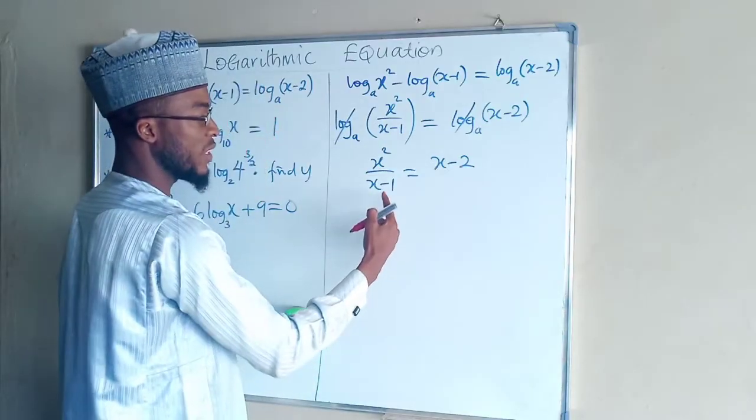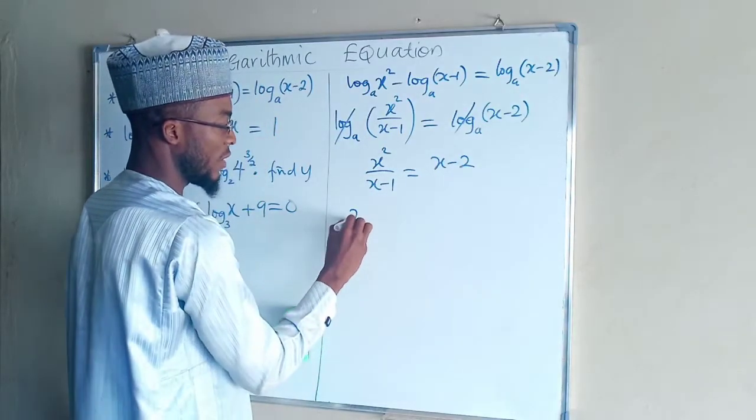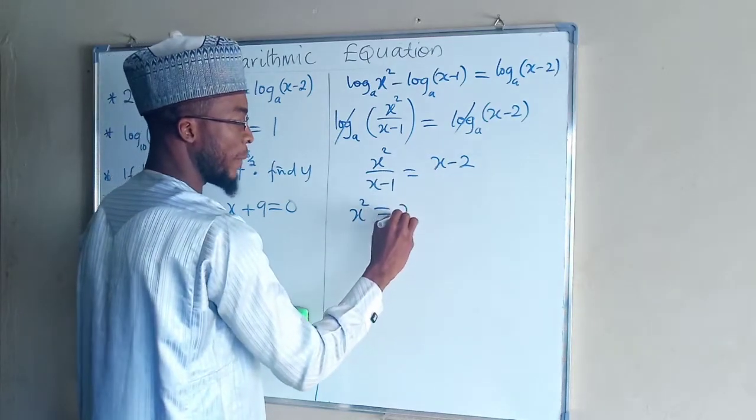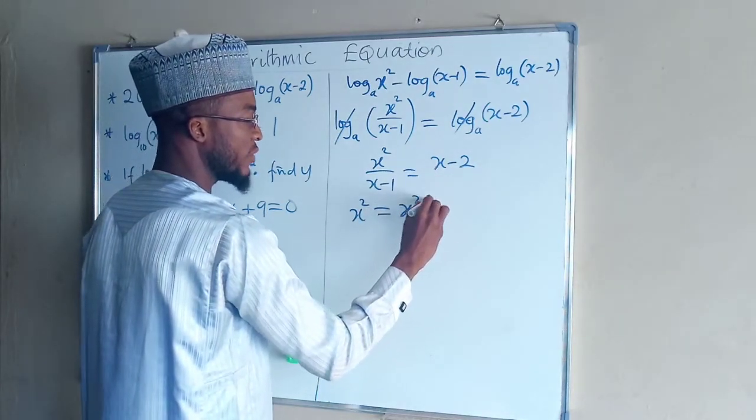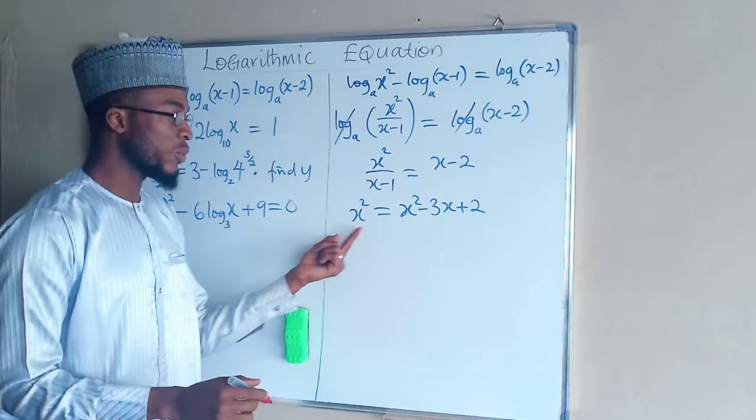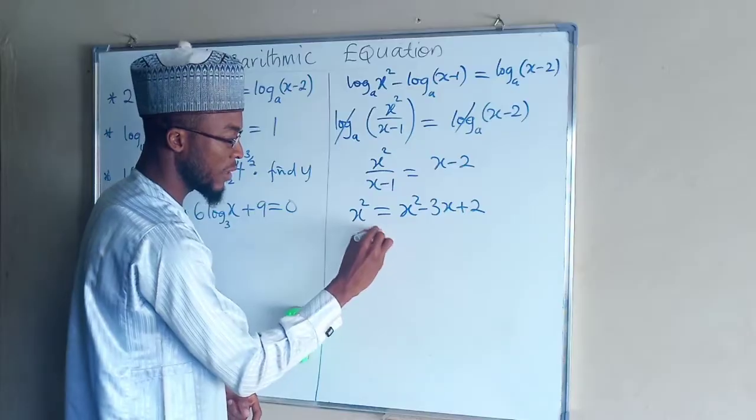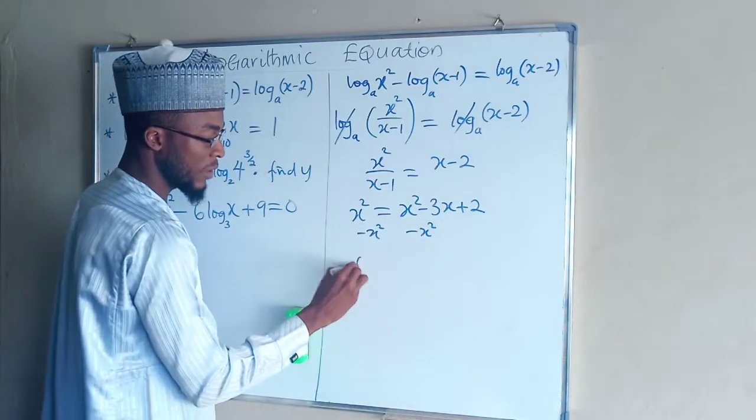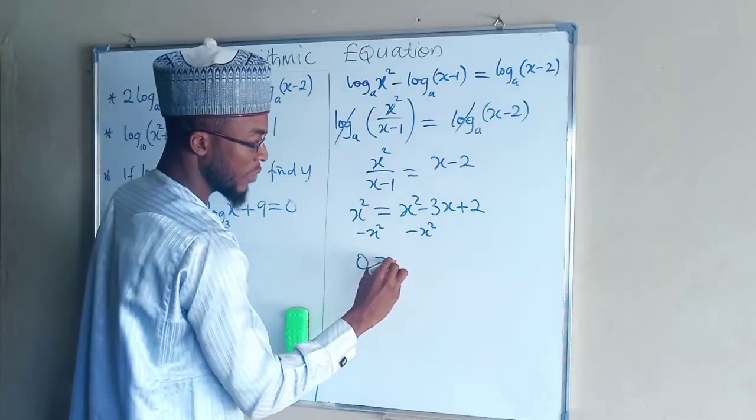By cross multiplication, this times this. Therefore x squared equals this times this which is x squared minus 3x plus 2. If you subtract x squared from both sides, we end up having 0 equals negative 3x plus 2.